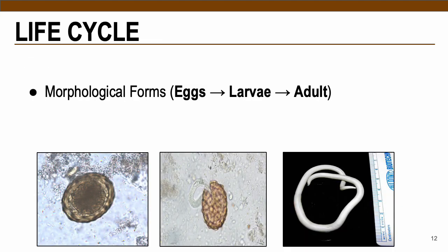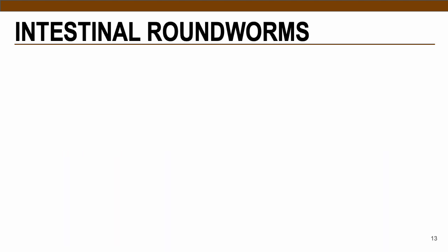Most nematodes undergo three morphological phases in their life cycle: eggs or ova, larvae, and adult worm. An example shows a fertilized corticated Ascaris egg, larva hatching from the egg, and the adult worm — whitish to pinkish, elongated. Nematodes are grouped by the habitat of their adult worms — intestinal or extraintestinal — and also by whether they contain phasmids or posterior chemoreceptors.